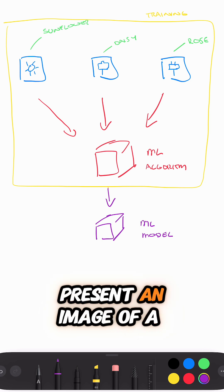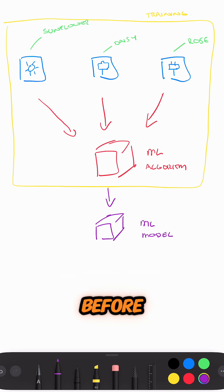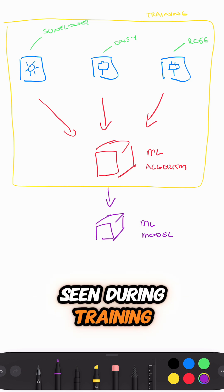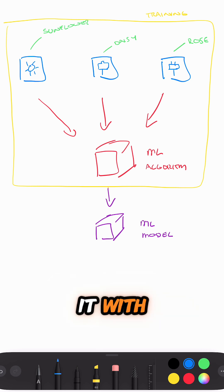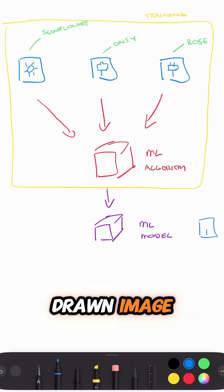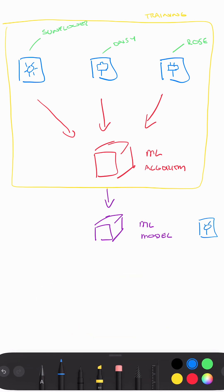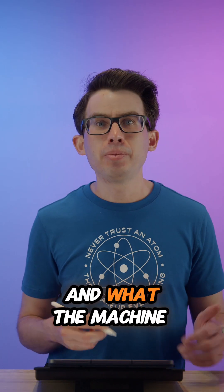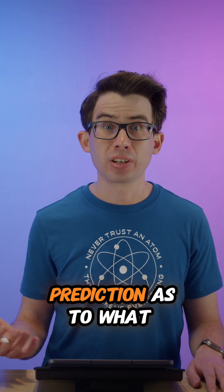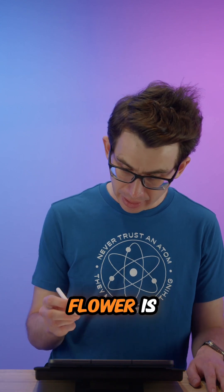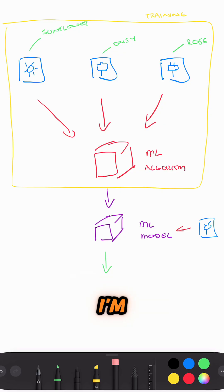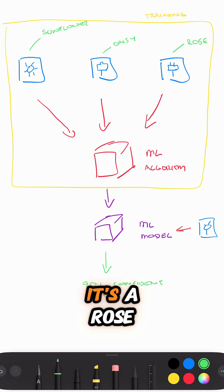We can then present an image of a flower that the model hasn't seen before — one it hasn't seen during training. The machine learning model will output a prediction as to what that flower is, for example: 90% confident it's a rose.